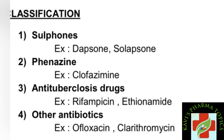The next class is phenazines — example: clofazimine. Next are anti-tuberculosis drugs used in leprosy treatment — examples include rifampicin and ethionamide. The fourth class is other antibiotics — examples include ofloxacin and clarithromycin. This is the full classification of anti-leprotic drugs.